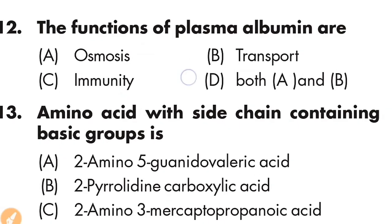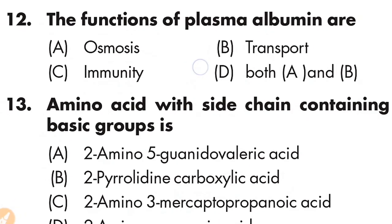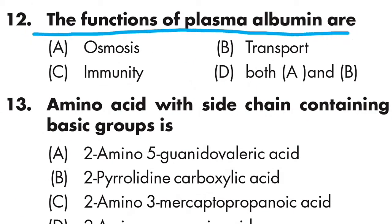Question number twelve: the functions of plasma albumin are — Option A is osmosis, Option B is transport, Option C is immunity, Option D is both A and B. The correct answer is Option D — the functions of plasma albumin include osmosis and transport.